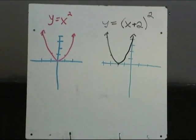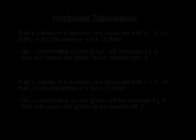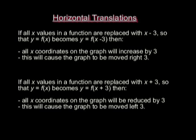Let's review what happens with horizontal translations. If all x values in a function are replaced with x minus 3, so that y equals f of x becomes y equals f of x minus 3, then all x coordinates on the graph will increase by 3, causing the graph to move right 3. If all x values are replaced with x plus 3, so y equals f of x becomes y equals f of x plus 3, then all x coordinates will be reduced by 3, causing the graph to move left 3. So replacing x with x minus something moves the graph right, and replacing x with x plus something moves it left.